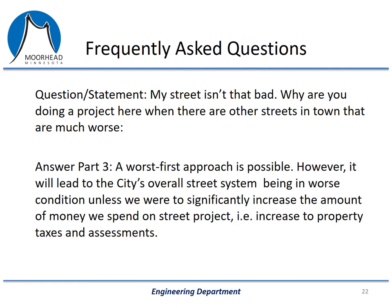The third part of this answer is that the city could prioritize doing the worst streets first. The problem is that this would require those streets to be reconstructed, and that's the most costly type of project. If we spend our budget addressing the streets in the worst condition, we would not have the money to perform intermediate maintenance on other streets. Remember that a reconstruction is a little over three times as expensive as a mill and overlay. Without increasing taxes or special assessments, we simply wouldn't have the money to do the maintenance, and the system as a whole would degrade in condition. To summarize: we don't do the worst street first because it's not cost effective, and our tax dollars are better spent maintaining other streets, which keeps the city street network in better condition as a whole.